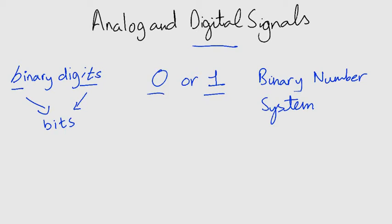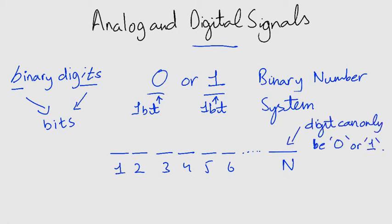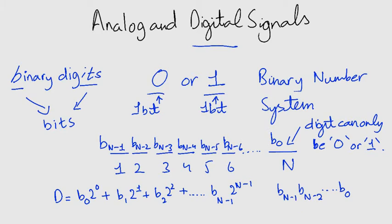Now imagine you have N bits to represent each sample of the analog signal. This means that the number would have N digits of the binary nature. The digitized sample value can then be expressed as this equation. This binary number is written as b_(N-1), b_(N-2) till b_0.